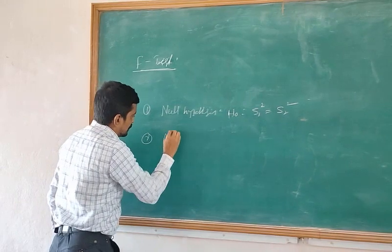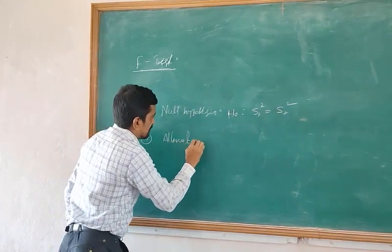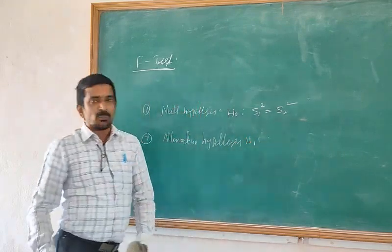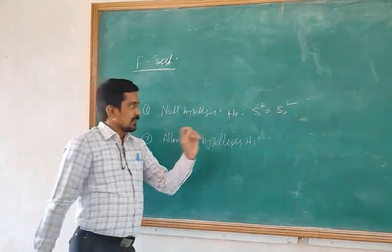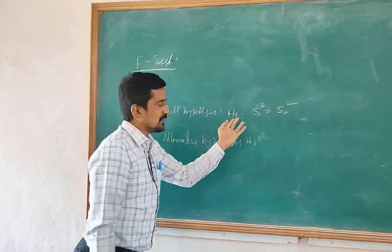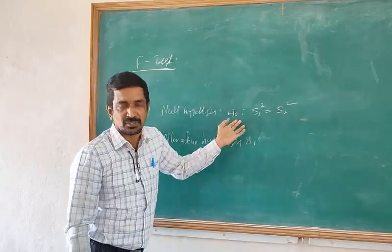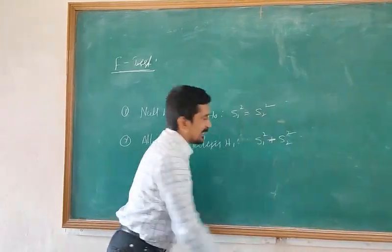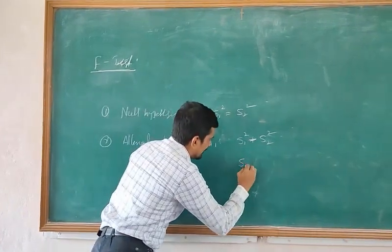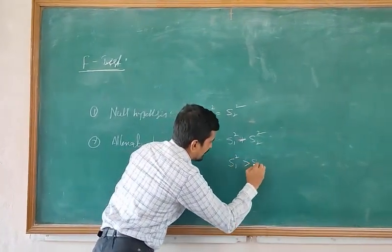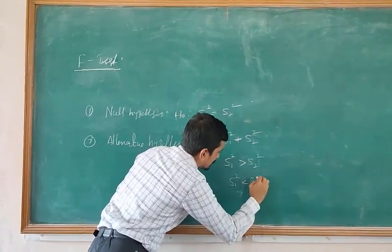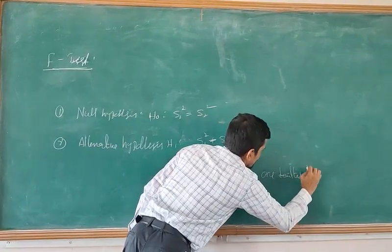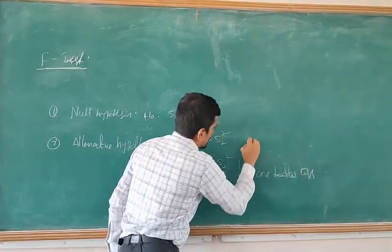The second is the alternate hypothesis, H1, which is the opposite of H0. For the two-tailed test, H1 is S1² not equal to S2². For the one-tailed test, H1 is either S1² greater than S2², or S1² less than S2².